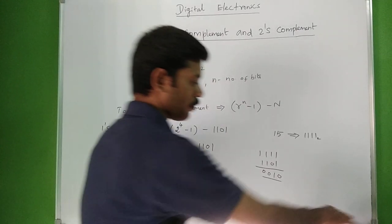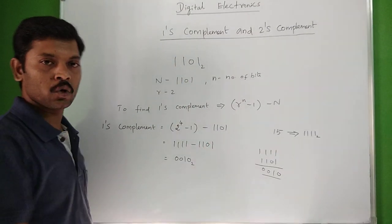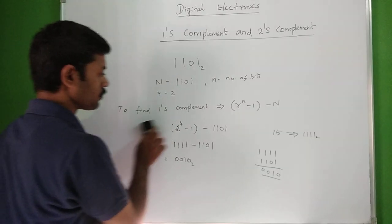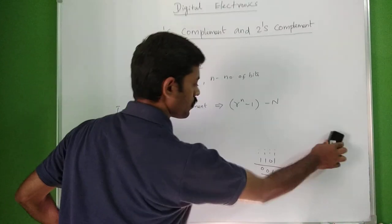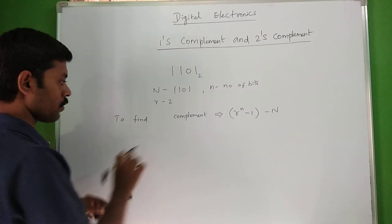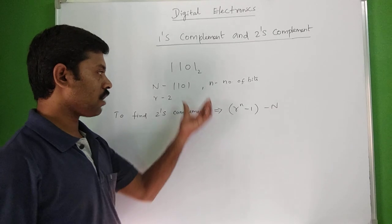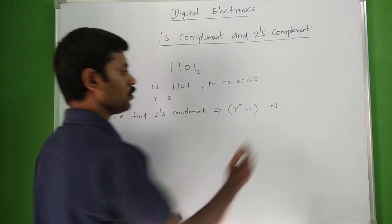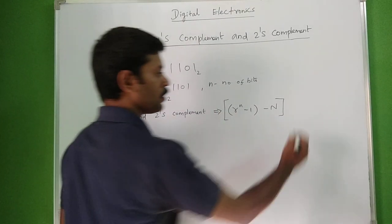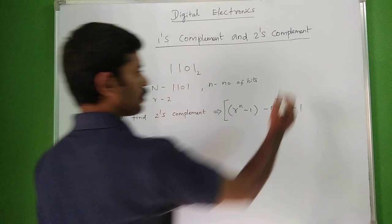Next is the 2's complement. Same number: 1 1 0 1. Here is the formula to find 2's complement. The 2's complement equals the 1's complement plus 1. So R's complement equals (R minus 1)'s complement plus 1. This is the 2's complement formula.